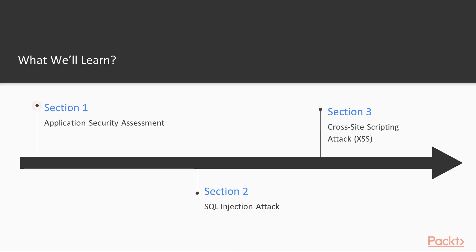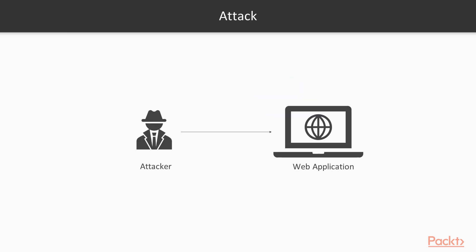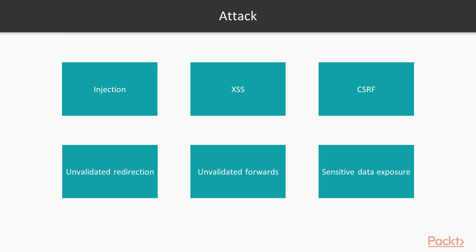We'll start with Section 1: Application Security Assessment. In this section we're going to learn about the course introduction, then how you can install a virtual machine inside your system, and inside the virtual machine how to install a Kali Linux machine.